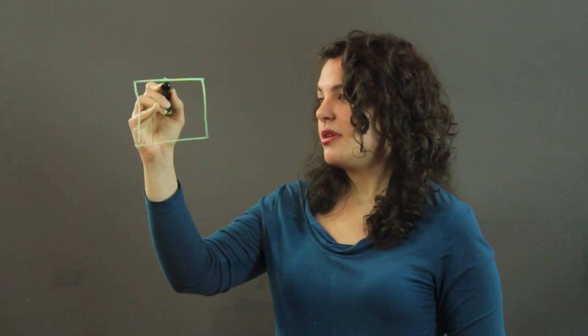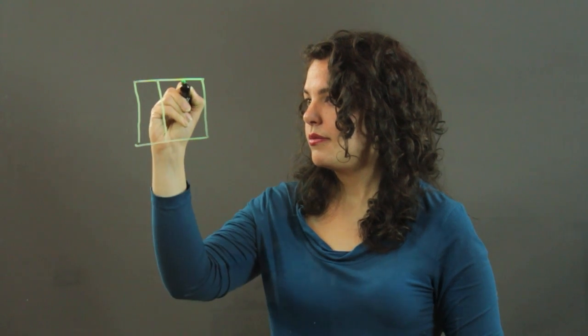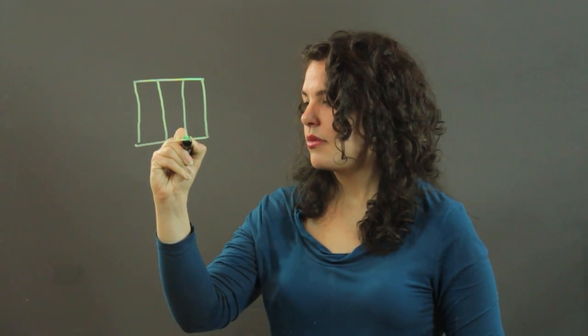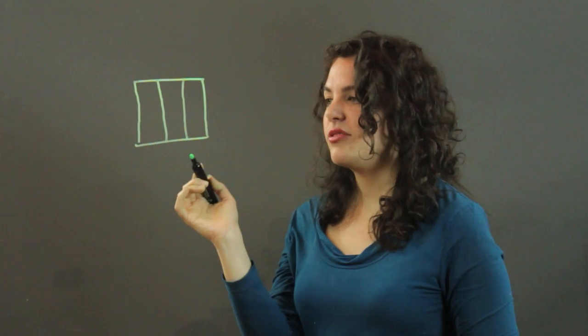And what you want to do is divide it into thirds vertically. So right now we have three even parts, roughly. It's hand drawn.